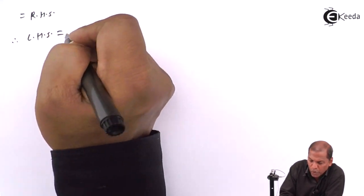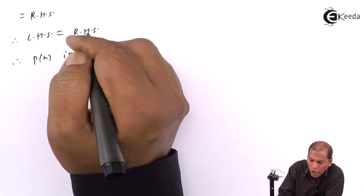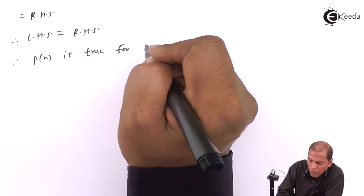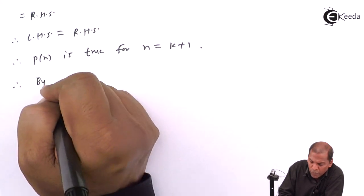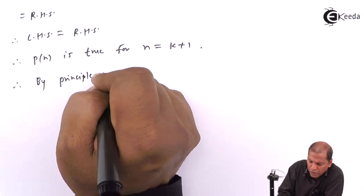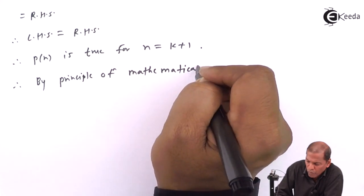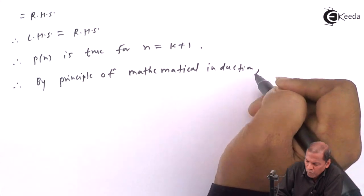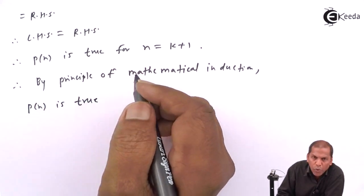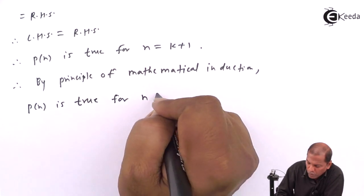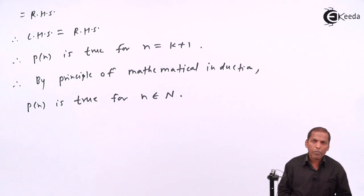So in this way we prove left hand side equals right hand side, and therefore P(n) is true for n equal to K plus 1. And therefore, by the principle of mathematical induction, P(n) is true for all natural numbers. So this is the required solution for the given problem. Thank you.